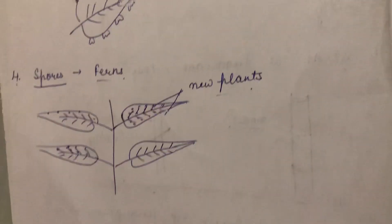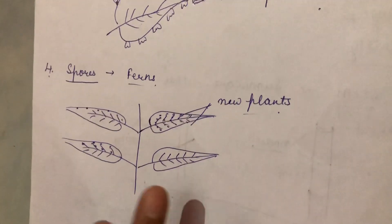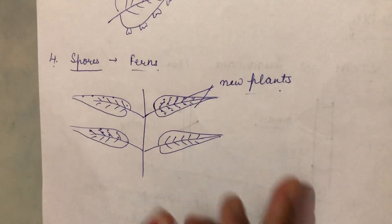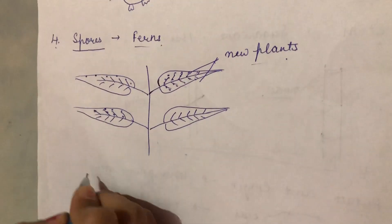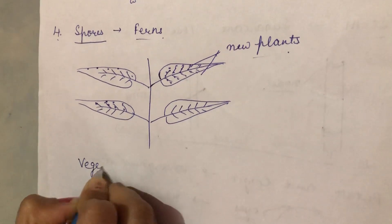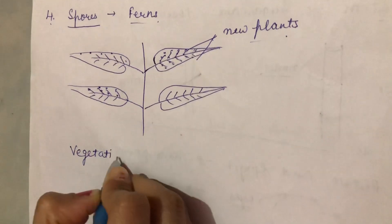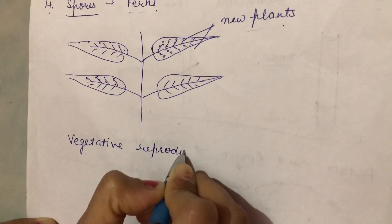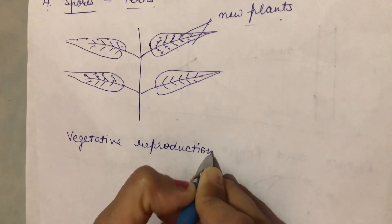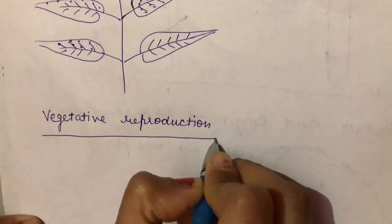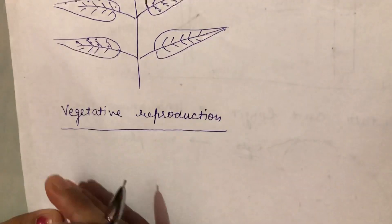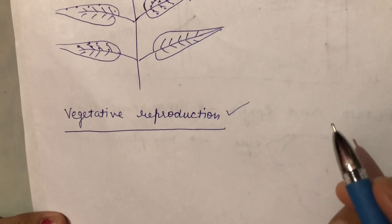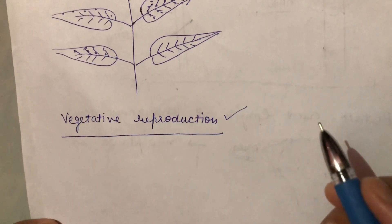This is all about how the parts other than the seeds can be used to grow new plants. And this kind of reproduction is also known as vegetative reproduction. Means when the new plant is grown by the parts other than the seeds, then the reproduction is known as vegetative reproduction. Thank you and have a nice day.